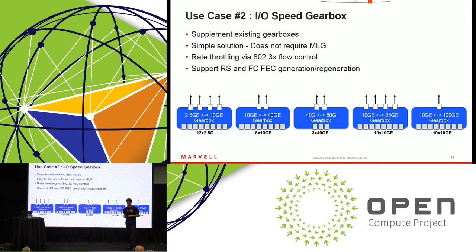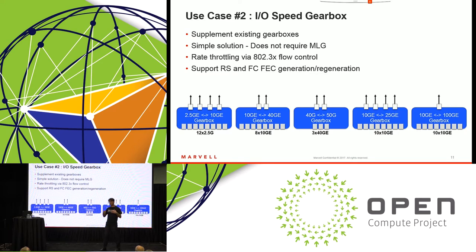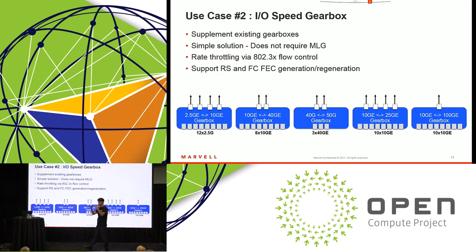The next use case is the gearbox. Today most gearboxes use a proprietary interface like MLG to move from one speed to another. We're introducing a device that can connect to any legacy device — any 10 gig legacy device — and convert to 25 gig, 50 gig, and 100 gig. For example, if you have a 40 gig device today and want to move to 50 gig or 100 gig, you just plug in the PIPE, and your uplink interface is increased or reduced based on the system's needs.